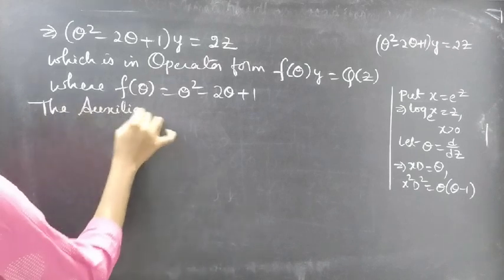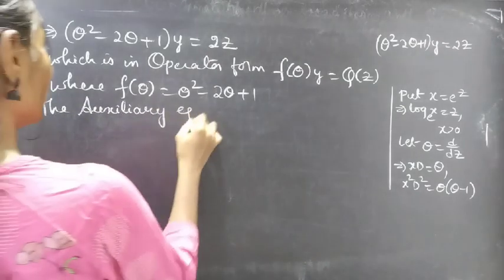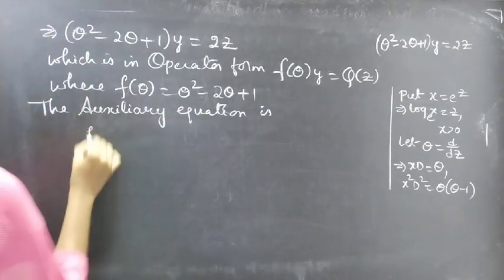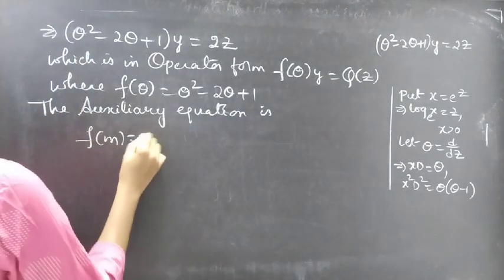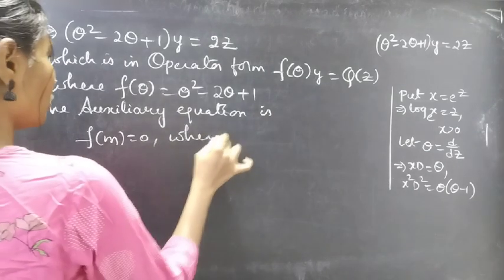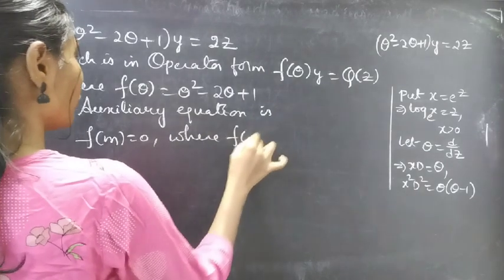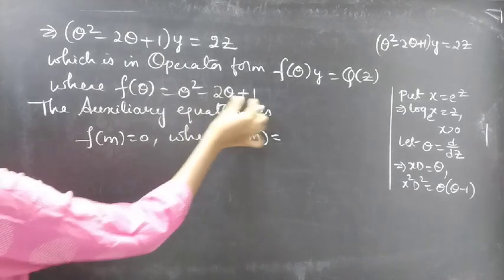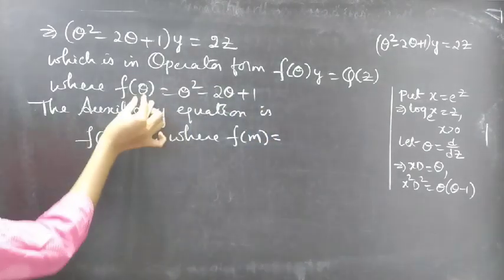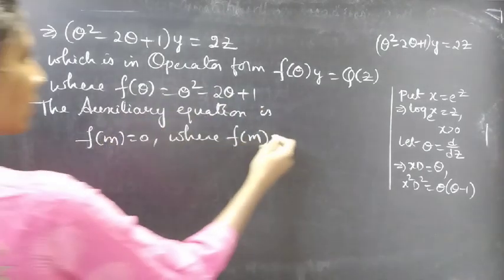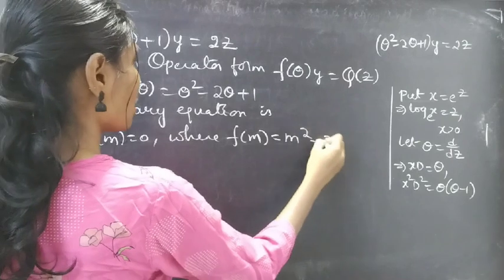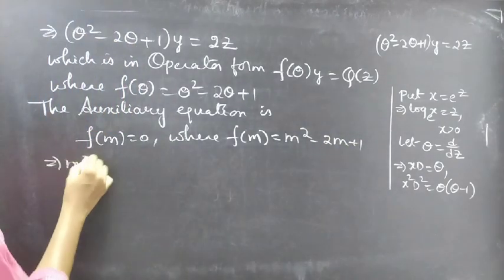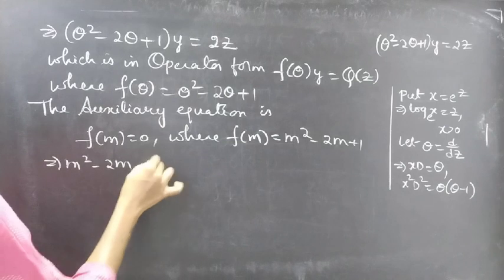The auxiliary equation is f(m) equals 0, where f(theta) is theta squared minus 2 theta plus 1. Replacing the differential operator theta by m, we get f(m) equals m squared minus 2m plus 1. So our auxiliary equation becomes m squared minus 2m plus 1 equals 0.